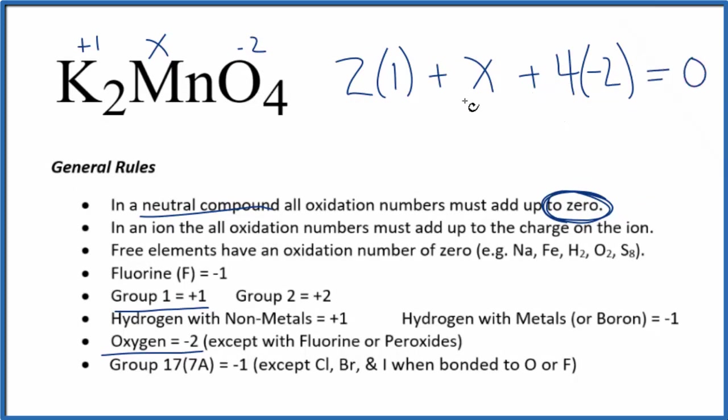So we have X, we have minus eight and plus two, so minus six equals zero, add six to both sides, X equals a positive six.